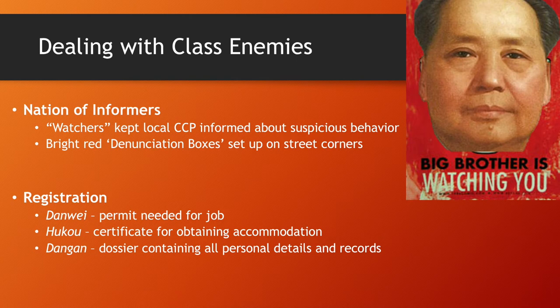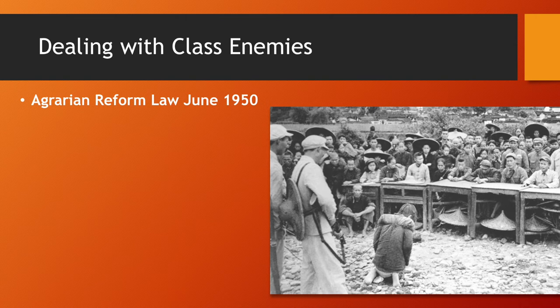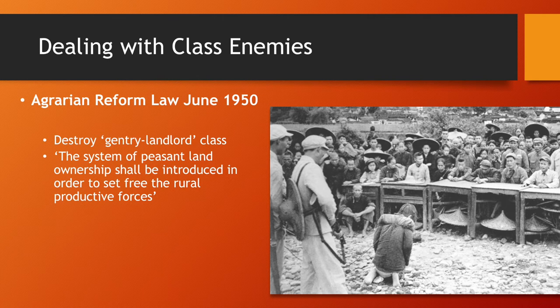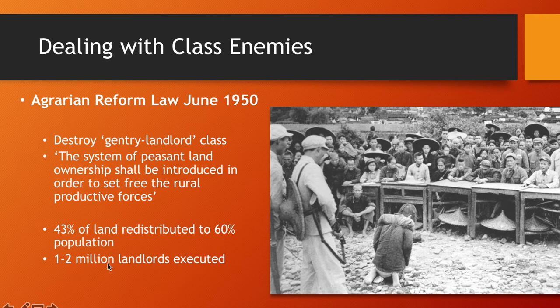The Agrarian Reform Law — they also used legislation, not just terror, though this legislation also involved some terror. Mao called on the peasants to seize land from their landlords, resulting in struggle meetings where landlords were abused and tortured, and one to two million landlords were executed, removing opposition through torture and death.